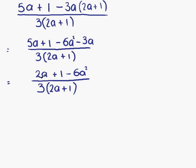The trinomial expression on the top — our next step would be to try and factorise it into two separate brackets. But this one, in fact, will not factorise, so we would be wasting our time. So this, in fact, is our final answer. Our fraction is 2a plus 1 minus 6a squared over 3 times (2a plus 1). Thank you.